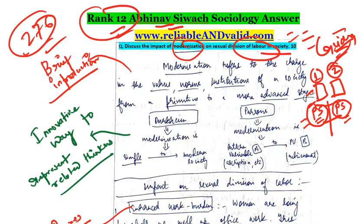Let's take a look at the question again: discuss the impact of modernization on sexual division of labor in society — how modernization is affecting the sexual division of labor. It is a 10-marker question, around 150 words, and you will be given 1.5 to 2 pages to attempt this answer.